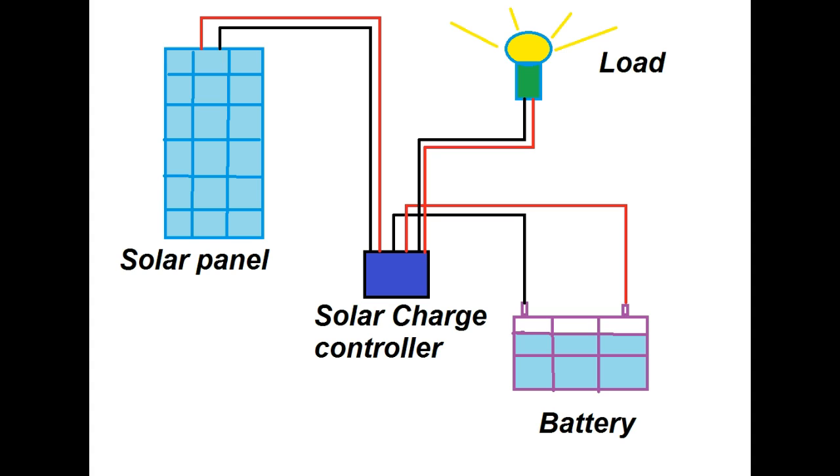Most of the 12 volt solar panel output voltage is about 16 to 20 volts. If you give these high voltage direct to 12 volt battery, your battery will be damaged from overcharging. Most batteries need about 14 to 14.5 volt to get fully charged.